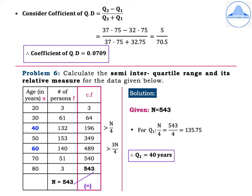Given N = 543. For Q1, find N/4 = 543/4 = 135.75. The value in the CF column greater than 135.75 is 196 — mark it as greater than N/4. The corresponding X value is 40, therefore Q1 = 40 years.